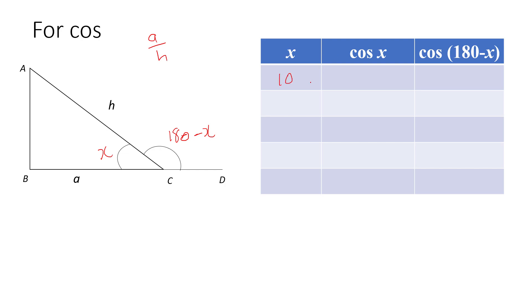Let's say x is 10. Cosine 10 equals 0.985. When x equals 10, the supplementary angle is 170. Cosine 170 gives negative 0.985. Looks very familiar, doesn't it?